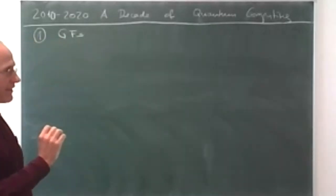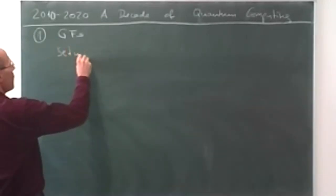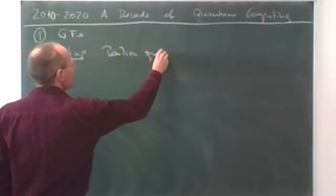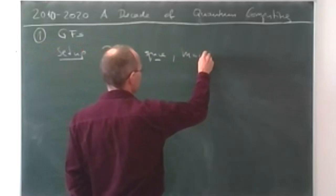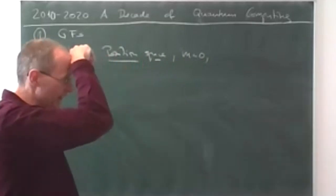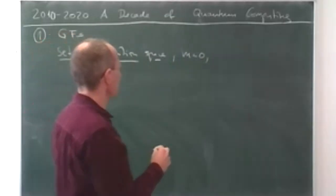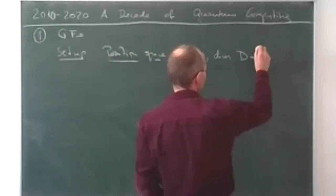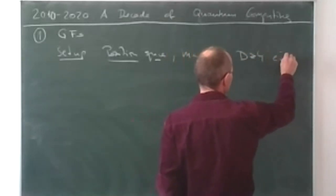That's the birth of graphical functions. The setup is: position space, mass equal to zero (especially if you want to do many new calculations, since the propagator is not algebraic for nonzero mass), and a dimension d which originally was four but now is four or larger — though it still has to be even.